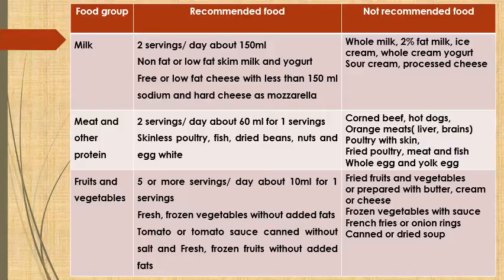Meat and other proteins: recommended is two servings per day of about 60 ml per serving — skinless poultry, fish, dried beans, nuts, and egg whites. Not recommended: corned beef, hot dogs, organ meats like liver and brain, poultry with skin, fried poultry, fried meat and fish, whole eggs, and egg yolks.